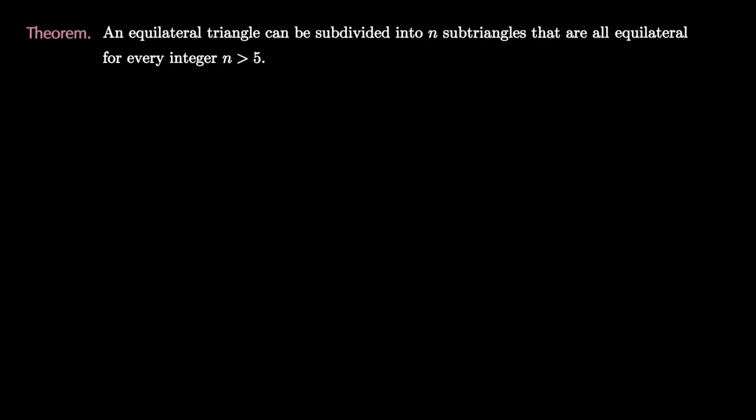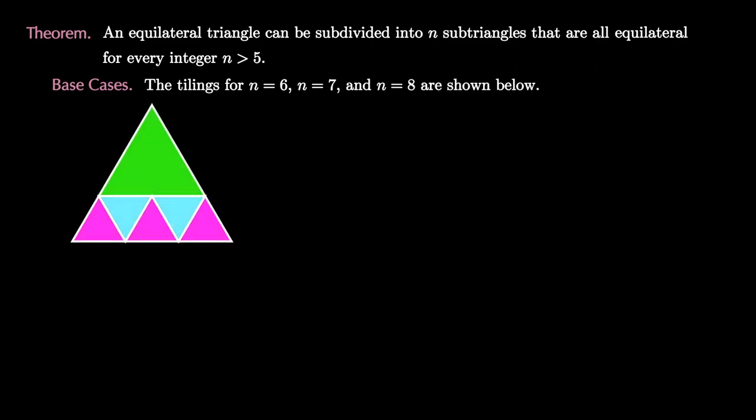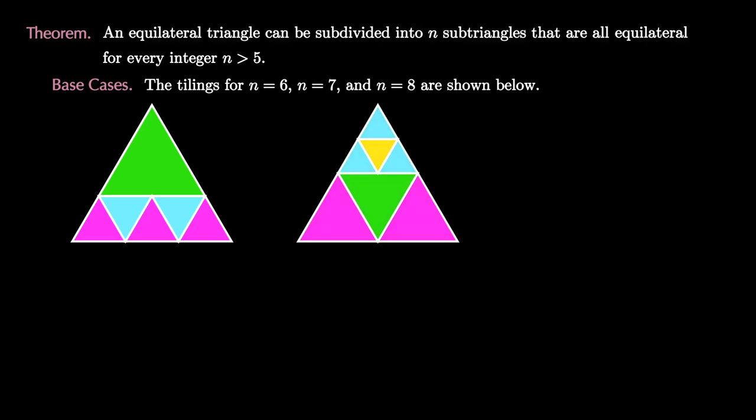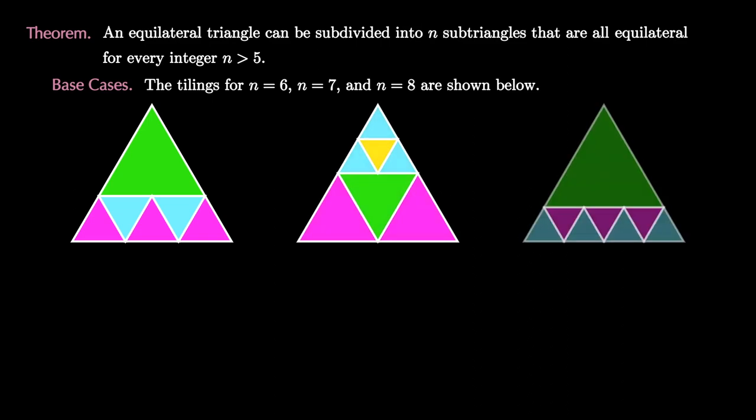Now let's use strong induction to revisit the tiling problem from the beginning of this video. It turns out that the theorem we want to prove is that an equilateral triangle can be subdivided into n sub-triangles that are all equilateral for every integer n greater than 5. For this problem, there are three base cases: when n equals 6 is pictured here, when n equals 7 is pictured here, and when n equals 8 is pictured here.